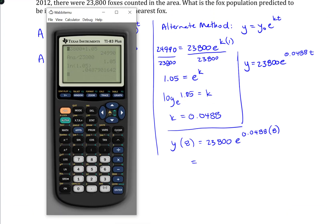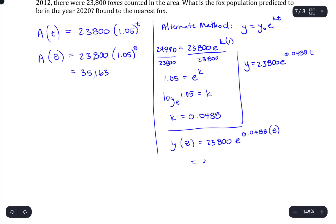So, the number of foxes after 8 years would be 23,800 e to the 0.0488 times 8. And, using the calculator, it probably looks like this would never come up with the same answer as what we had on the other half of this problem. But, just watch and see. So, 0.0488 times 8. And, we get 35,166.